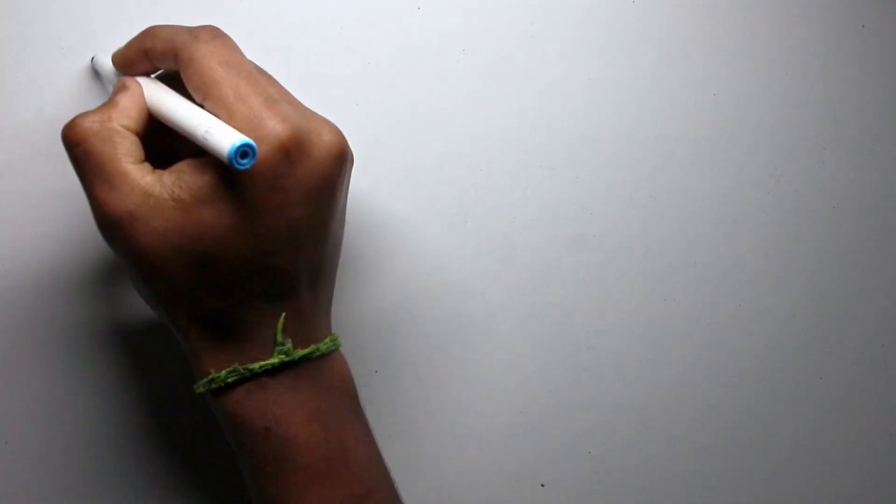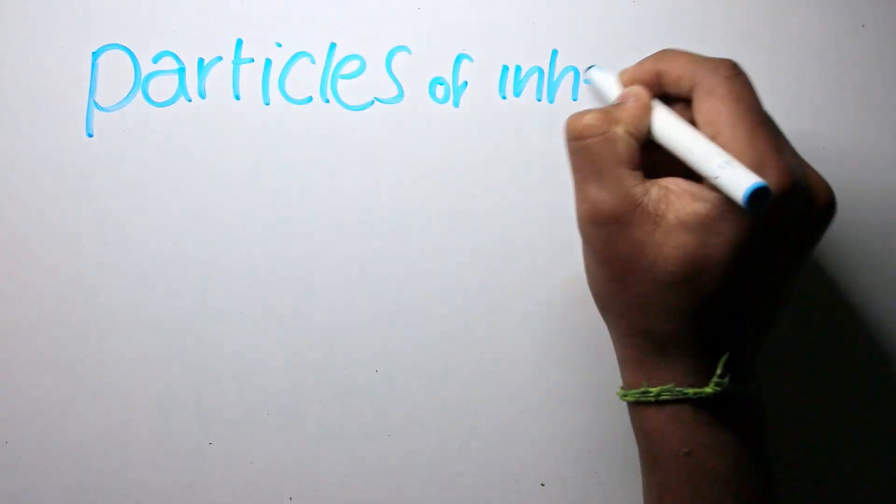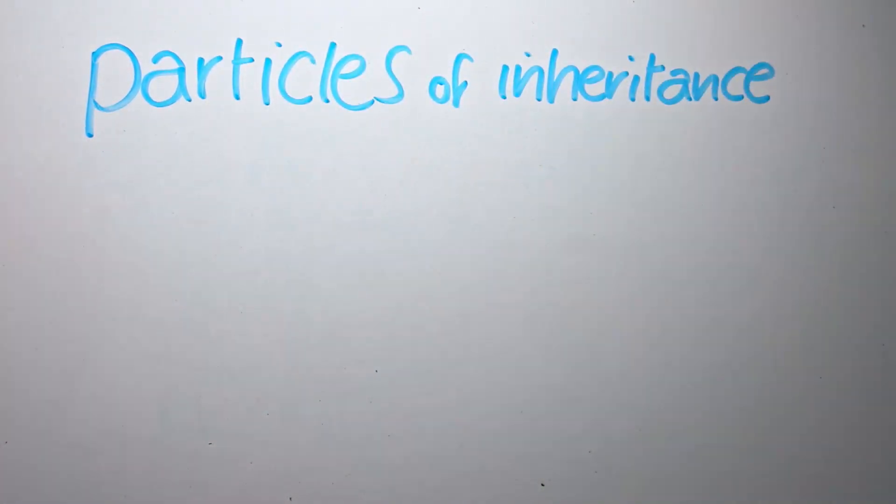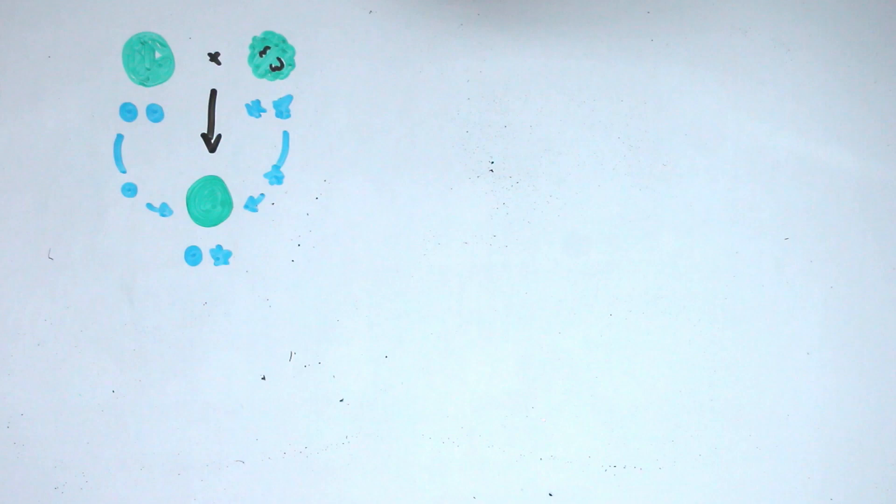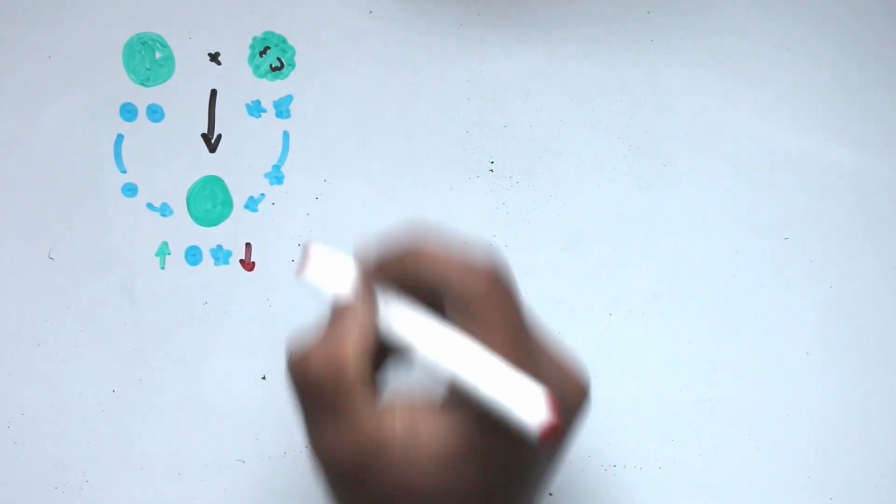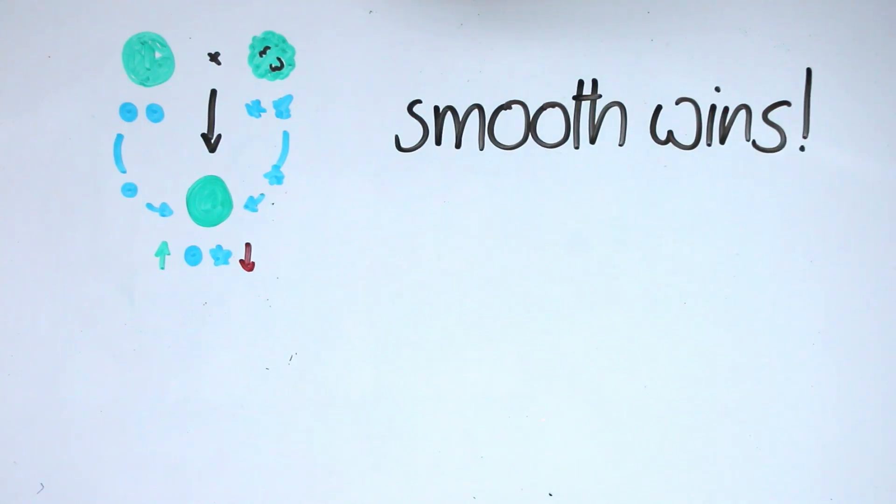His idea was that traits of the parent were inherited through things called particles of inheritance. Offspring of two parents would receive one particle from each parent, two in total. In this case, the smooth pea gave a smooth particle, and the wrinkled pea gave a wrinkled particle. When the offspring had two different particles, Mendel thought that the dominant particle was the one that gave the offspring its trait, in this case, the smooth particle.